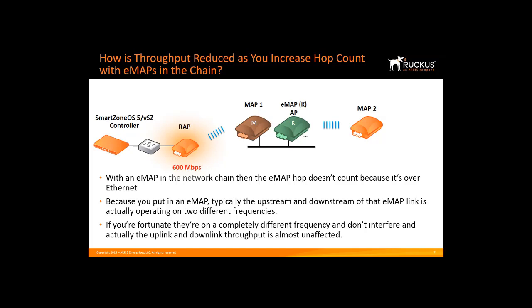So in this case, if we have 600 Mbps between the controller and the root AP, and a mesh speed of 300 Mbps between the root AP and MAP one, then effectively between MAP two and the root AP we also have approximately 300 Mbps per second.